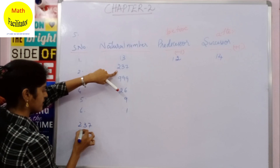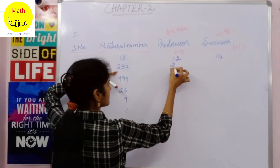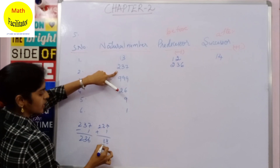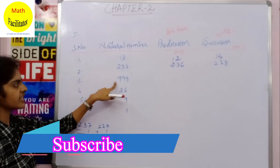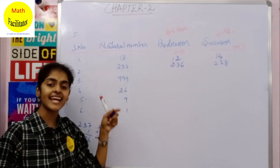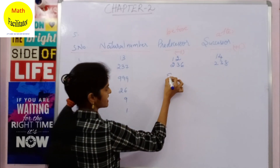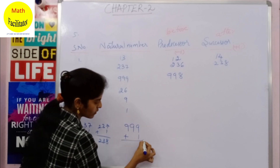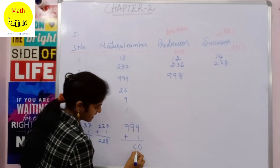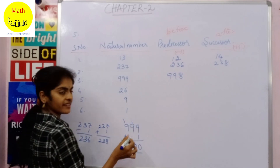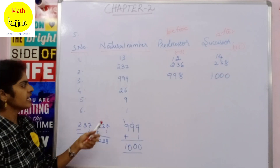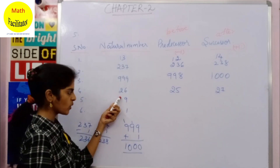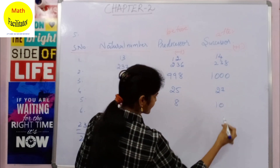Adding 1 to 237 gives successor 238. For 999: the predecessor is 998. The successor of 999 is 1000 — since 9 plus 1 is 10, carry 1; 1 plus 9 is 10, carry 1; 1 plus 9 is 10 — so it is 1000. For 26: predecessor is 25, successor is 27. For 9: predecessor is 8, successor is 10.